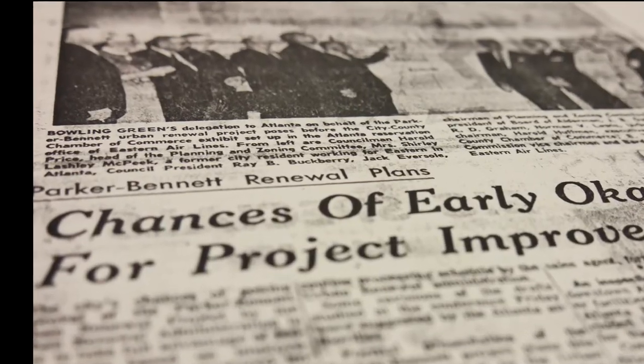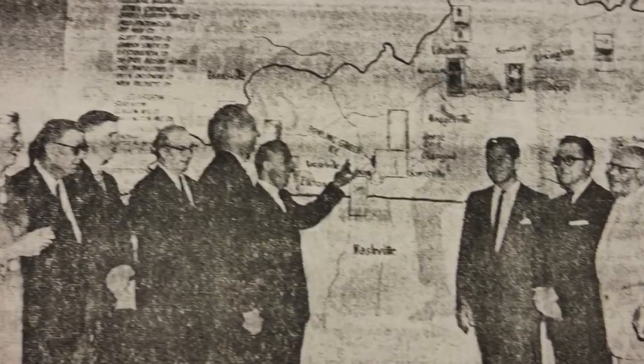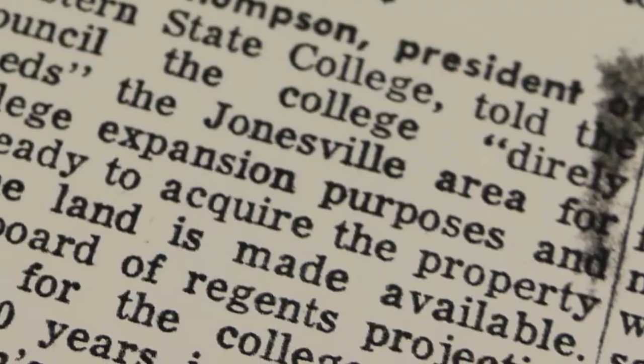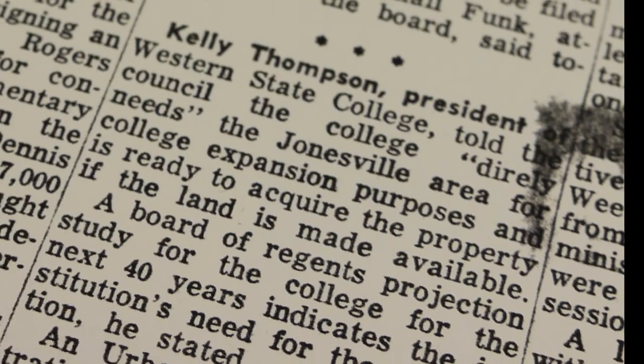In 1963, an urban renewal project was proposed for the 34 acres next to the college that contained the Jonesville community. When it first started, we just didn't think it would ever happen. You had 65 to 70 homes, families lived here — 400 to 500 people. The college's student population began to increase and showed no sign of leveling off. Also, the college was trying to attain university status. These were people that owned their own homes, had deeds and everything. We all thought we're going to be here forever — we'll live here, we will die here, we were born here. But it didn't work that way.